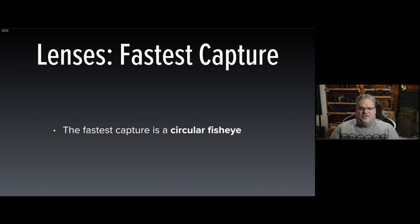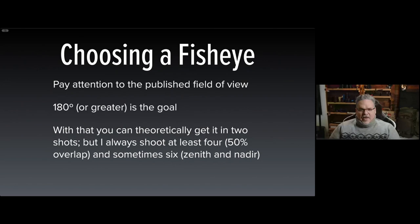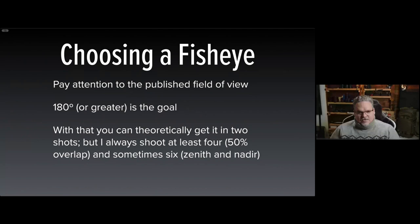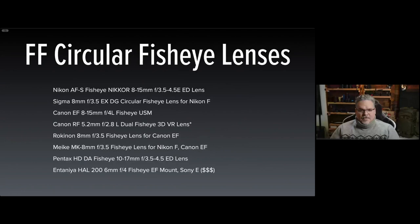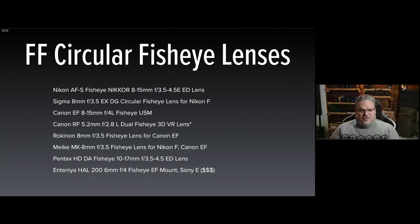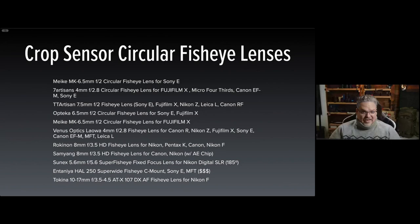The easiest way to do tiny planets is to have a circular fisheye lens. Pay attention to the published field of view — you want 180 degrees or more. You can theoretically take two pictures and be done, but you can't get 50% overlap at the edges, so I shoot at least four and sometimes six images. There's an incomplete list of circular fisheye lenses for different cameras — some are expensive, most are not. Many are manual focus only, which is totally fine because you have essentially infinite depth of field shooting so wide.